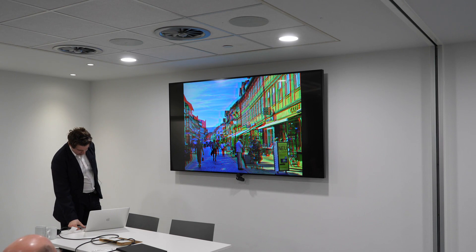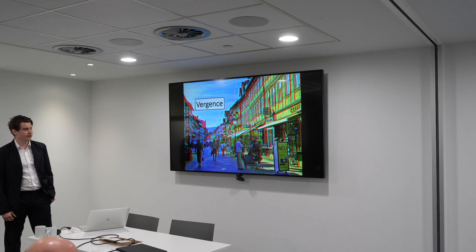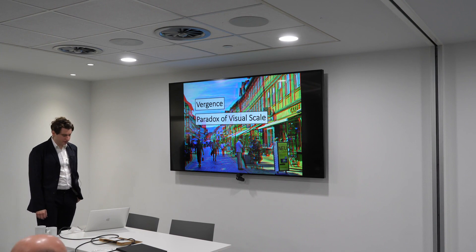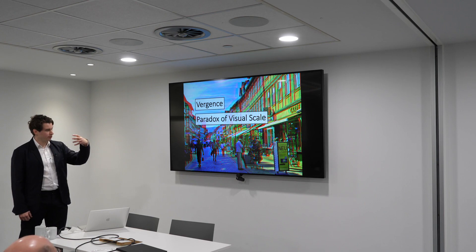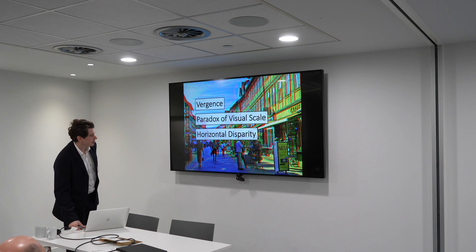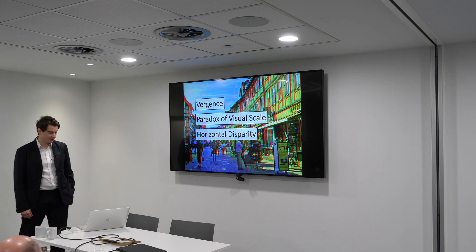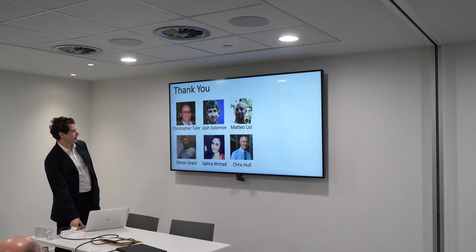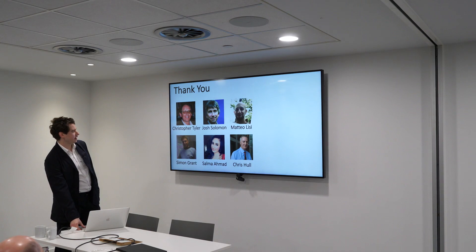To conclude: I've argued that vergence really isn't an effective absolute distance or absolute size cue. This implies a paradox for visual scale — triangulation cues dominate pictorial cues in terms of absolute size and scale, yet none of the individual triangulation cues are that effective. I argue that the only way out of this dilemma is to rely on horizontal disparities to provide absolute distance and size. Thank you to everyone who helped with this project: Christopher Tyler, Josh Solomon, Matteo Lisi, Simon Grant, Salma Ahmed, and Chris Hull.